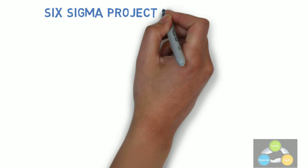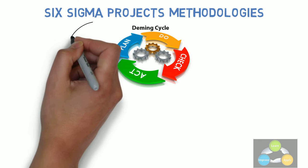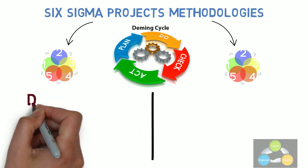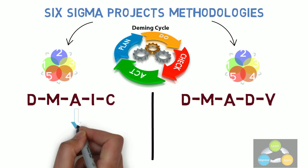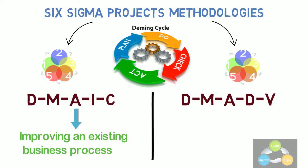Six Sigma projects follow two project methodologies, inspired by Deming's PDCA cycle. These methodologies composed of five phases each. DMAIC, popularly known as DMAC, and DMADV. DMAC is used for projects aimed at improving an existing business process, whereas DMADV is used for projects aimed at creating a new product or process designs. Now let's see first the DMAC.